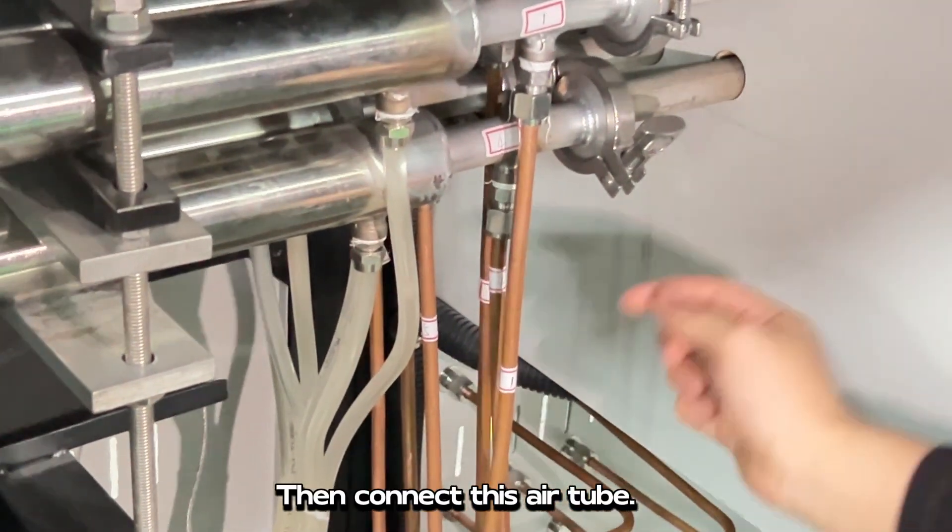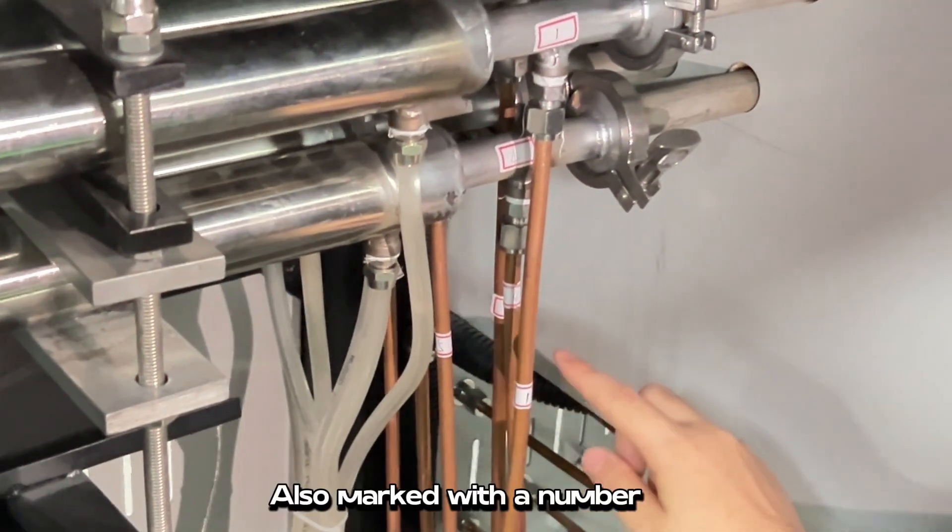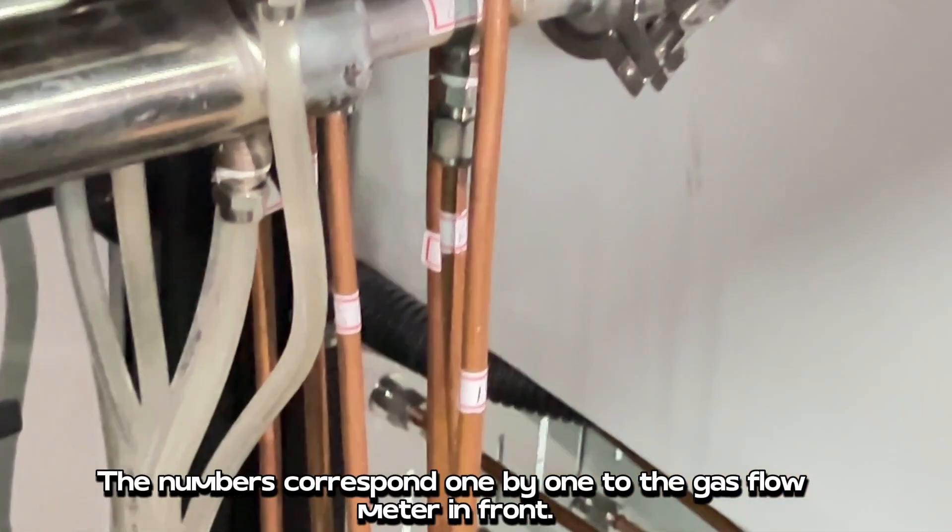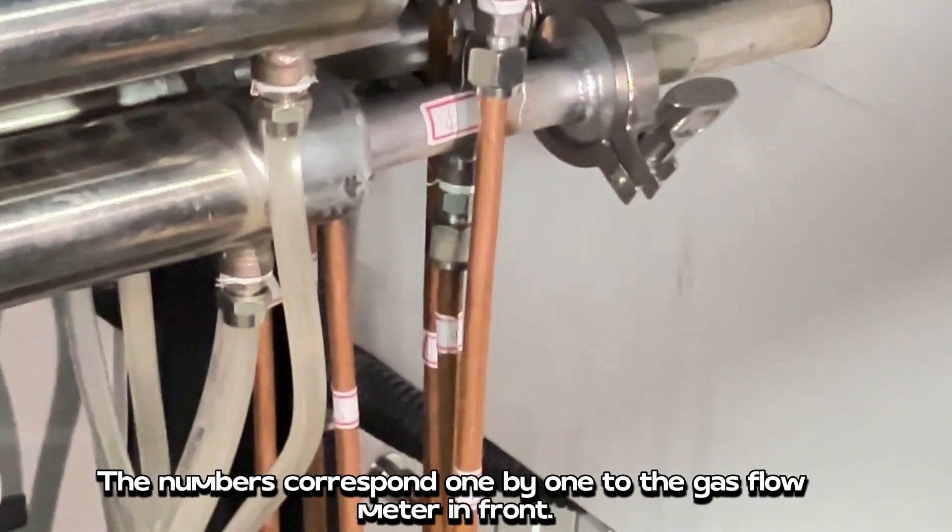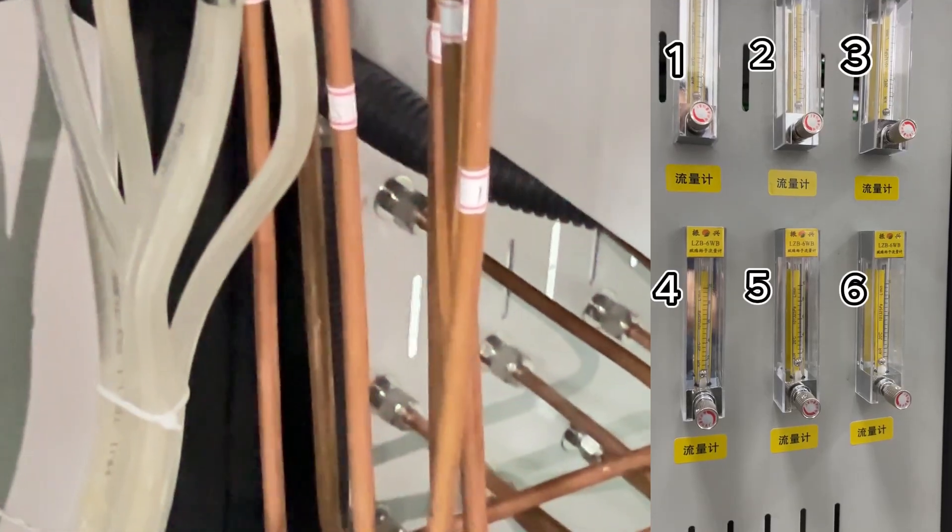Then connect this air tube. Also marked with a number. The numbers correspond one by one to the gas flow meter in front.